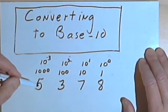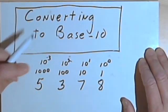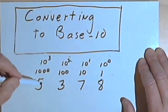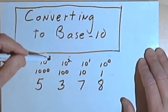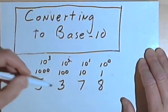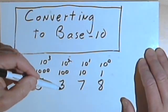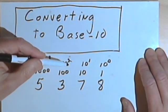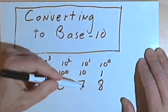And then we can think of that first number, that 5,000, as being 5 times 10 to the third, or 5 times 1000. And the 3 is 3 times 10 squared. And so on with the 7 and the 8.